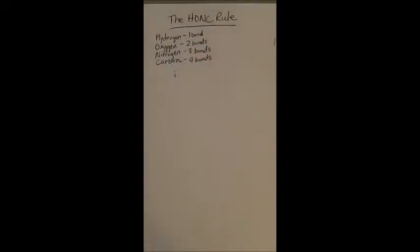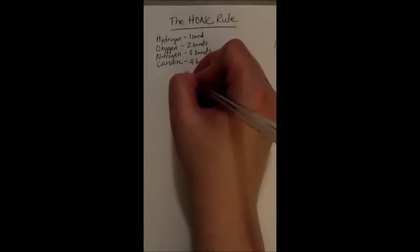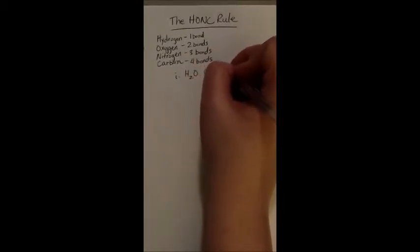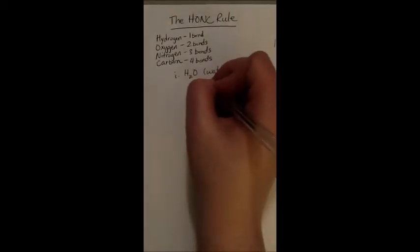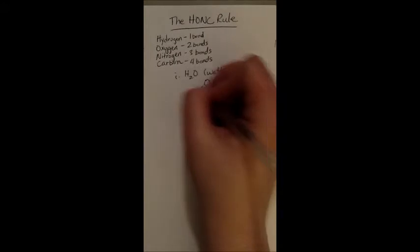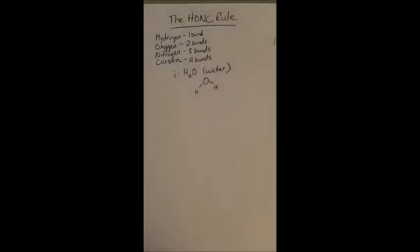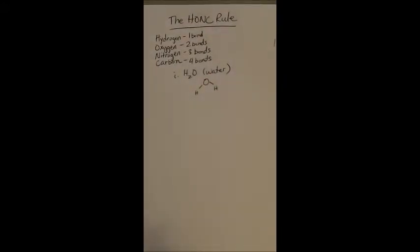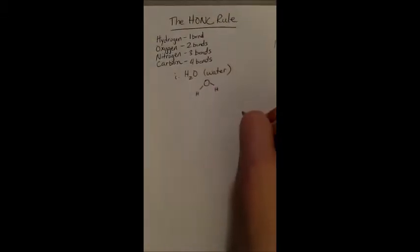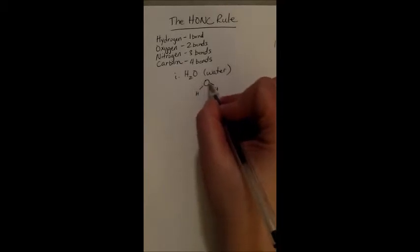One example that is pretty common is H2O. Of course, we know that as water. So water has an oxygen with two bonds, and then the hydrogen, each hydrogen has one bond. One hydrogen, two hydrogens, and oxygen with two bonds.